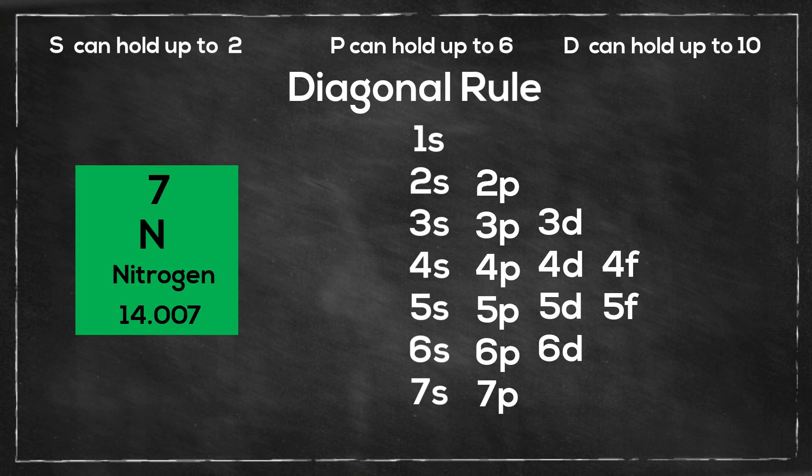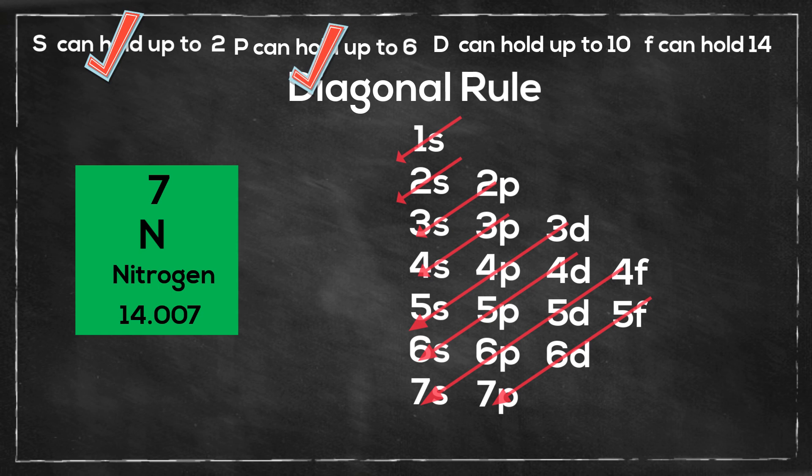Also, the s orbitals can hold up to 2 electrons, the p can hold up to 6, the d can hold up to 10, and the f can hold up to 14. And a good way to remember it is that it goes up by 4 each time.